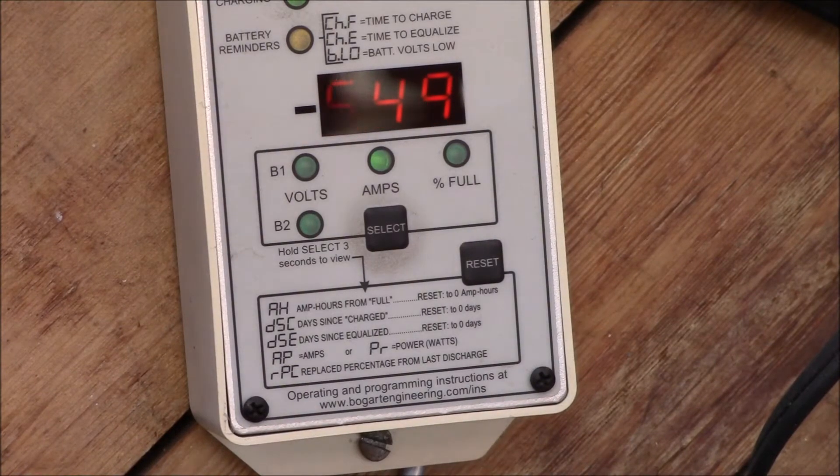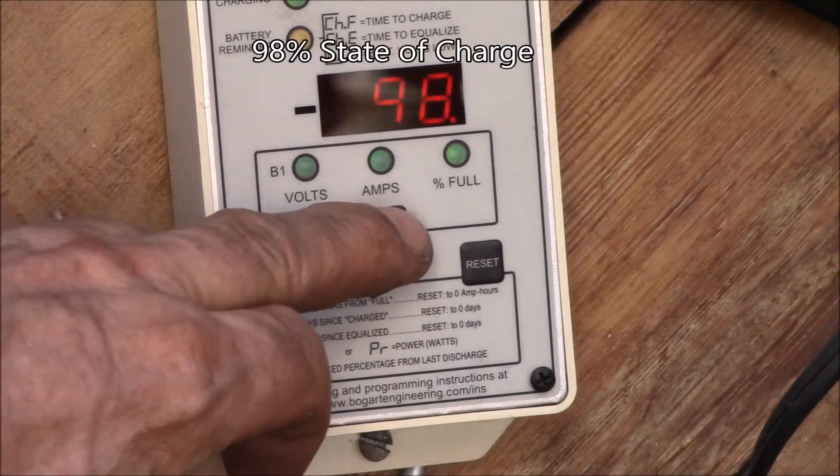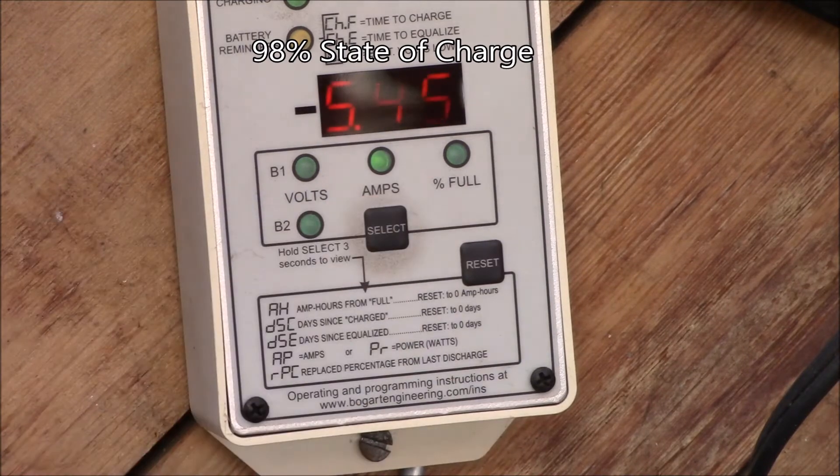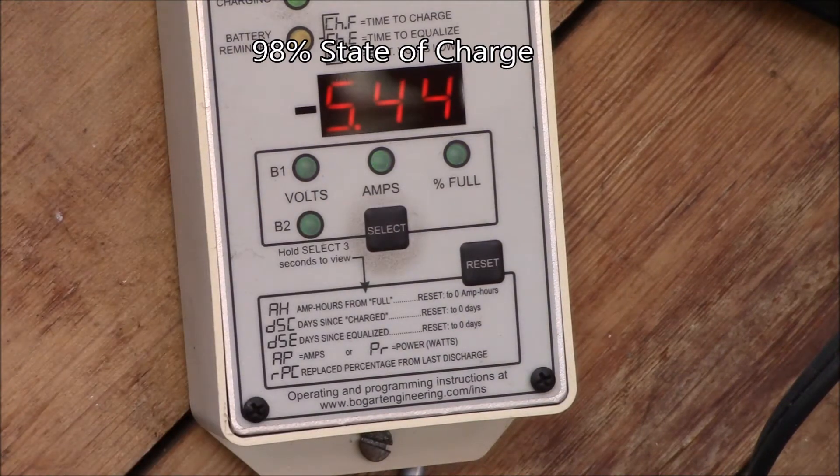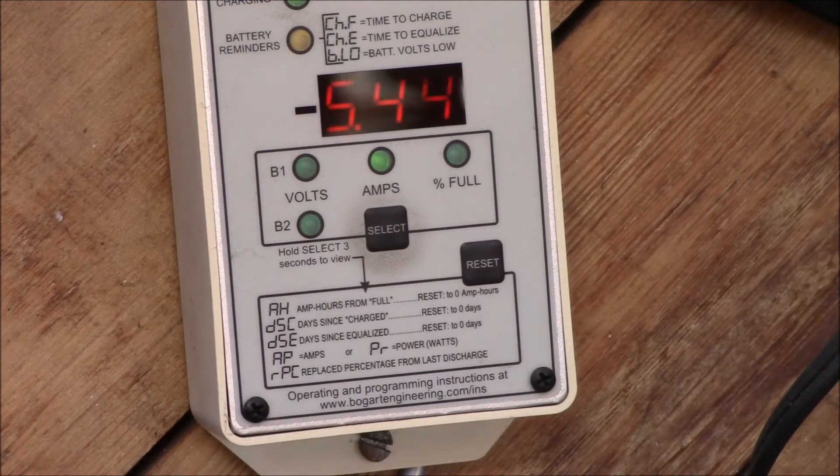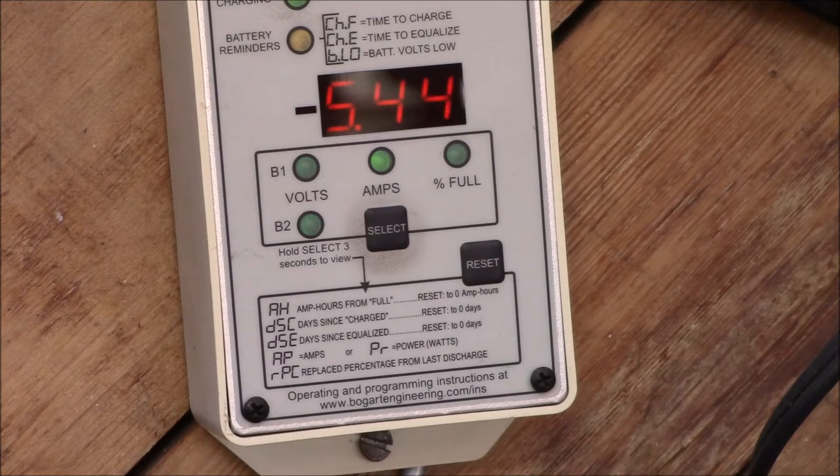There's the trimetric battery monitor right there. Five and a half amps into the batteries. We're 98% charged, 14.2 volts and 5.5 amps. I find the charge controller display is about 2 amps low, maybe 2.5.